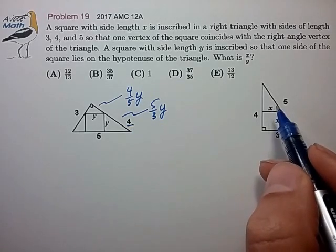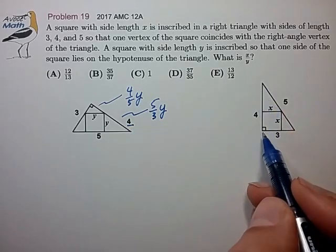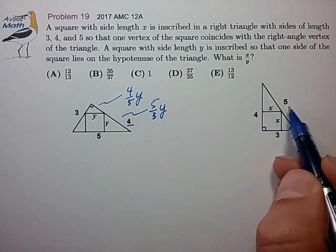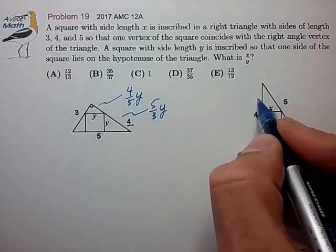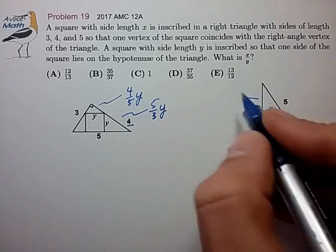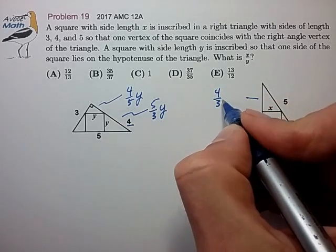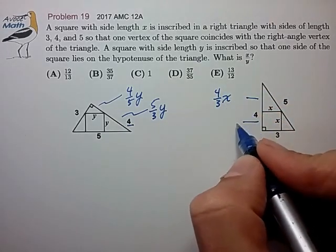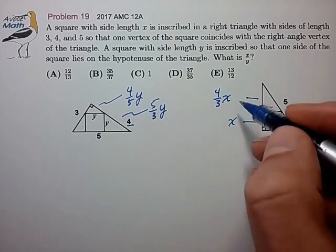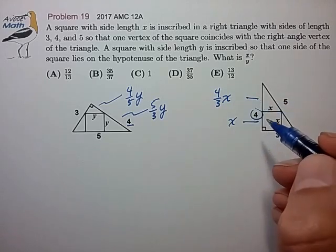In the right case, we have again the situation where all these triangles are similar to the 3-4-5 right triangle, from which we find that this short distance is 4/3 x. This distance, of course, is x. And these have to sum to this side length, 4.